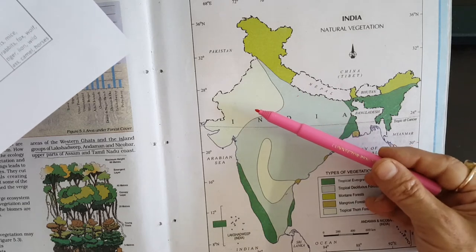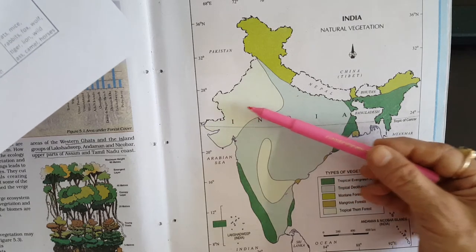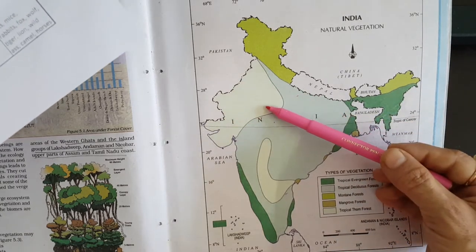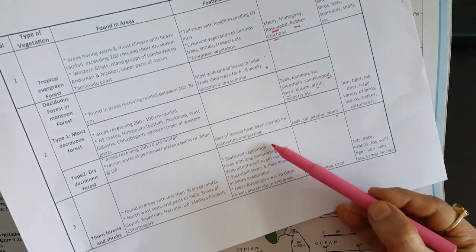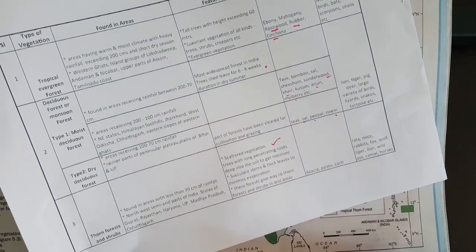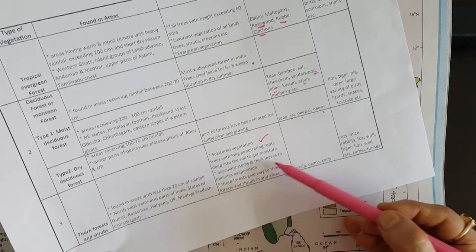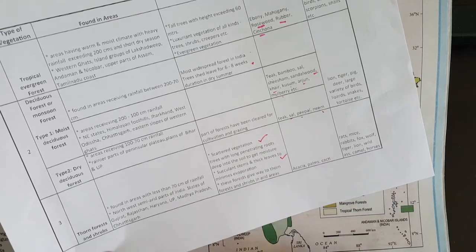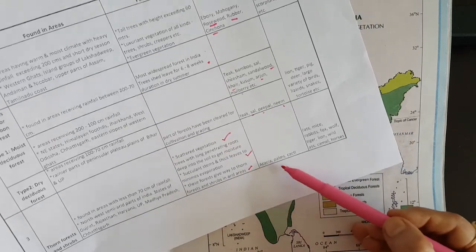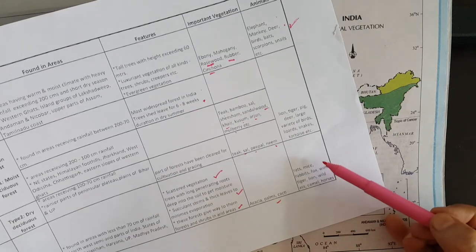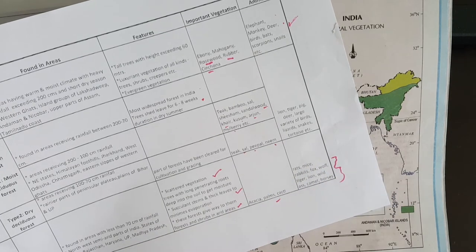Thorn forests stretch across the northwestern parts of India — states like Gujarat, Rajasthan, Punjab, Haryana, western UP, parts of Madhya Pradesh and Chhattisgarh. The important characteristics of this vegetation are that it is scattered, trees have very long penetrating roots to absorb moisture from the water table, stems are succulent, and leaves are very thick to minimize evaporation. The forests give way to thorn forests and shrubs in extreme arid areas. Important plants are acacia, palm and cactus. Animals include rats, mice, rabbits, fox, wolf, tiger, lion, wild ass, camel and horses.